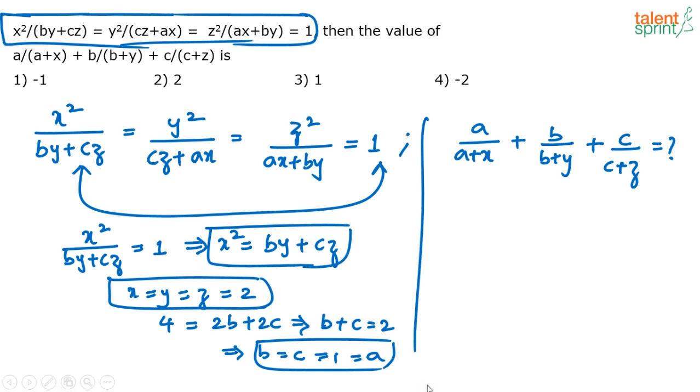Now substitute. So we know a, b, c are 1 and we know x, y, z are 2. So 1 by 1 plus 2. Again this expression is also symmetric. So if this is 1 by 1 plus 2, the others also will be 1 by 1 plus 2. So 1 by 3 plus 1 by 3 plus 1 by 3. 1 by 3 plus 1 by 3 plus 1 by 3 equals to 1.